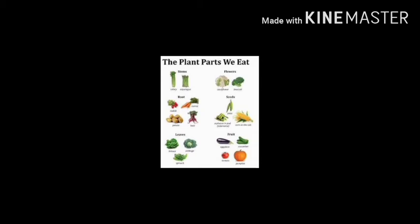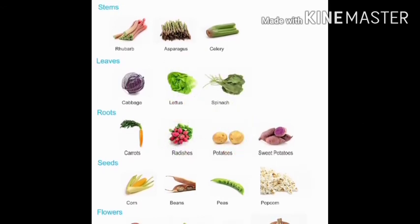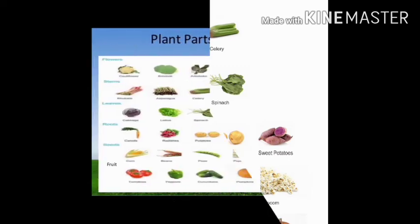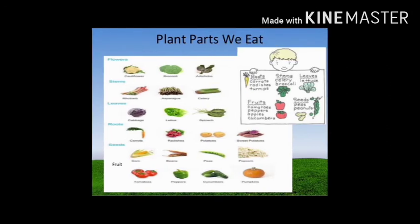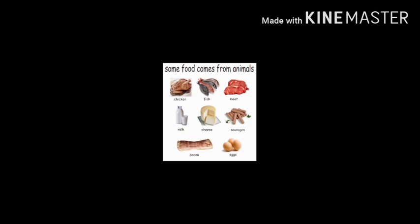In one or the other way, all parts of the plant are consumed. For example: stems like asparagus and celery, leaves like cauliflower and cabbage, roots like carrots and radishes, seeds like corn and beans, and flowers like cauliflower. We can and should eat all plant parts to stay fit and healthy.